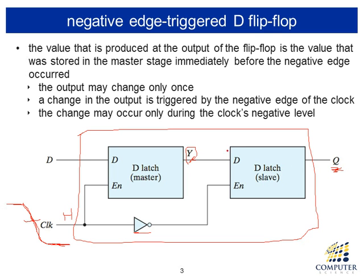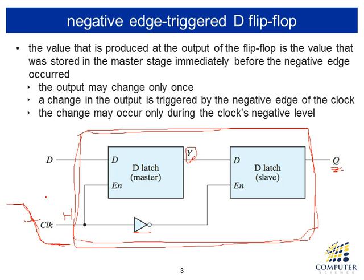So with this cascaded configuration, considering the two latches as one flip-flop, the output changes to match the input when the clock makes a transition from high to low — that is the triggering of the flip-flop. This flip-flop is made of two latches connected in cascade mode, and it is triggered when the clock transitions from high to low. We call this a negative edge trigger, or falling-edge trigger.